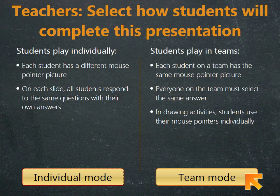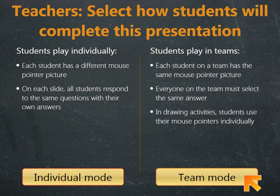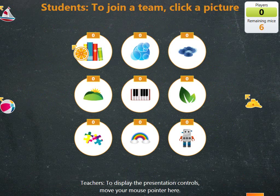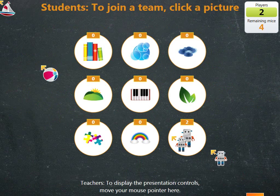Next, I'll set up a class activity in team mode. I use team mode when I want students to collaborate on a classroom activity. To keep this exercise simple, I'll divide my four mice into two teams of two students each. I'll assign one team to be the robots and the other team to be the bubbles.